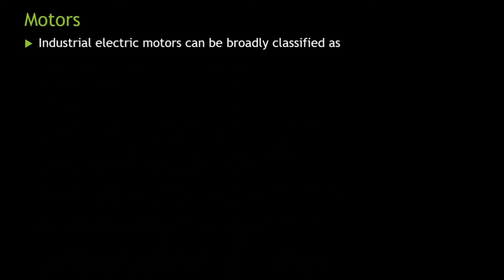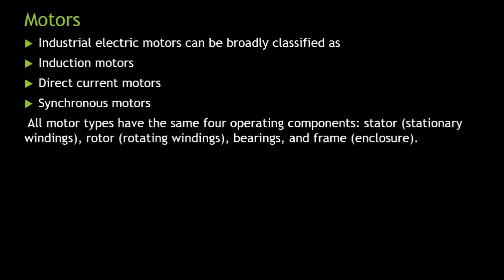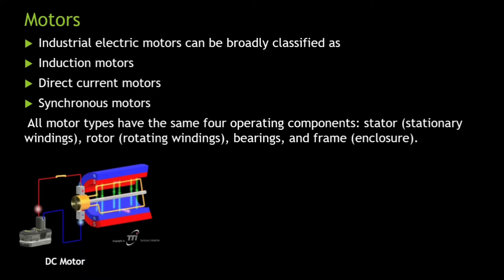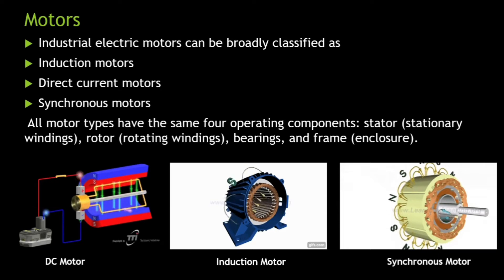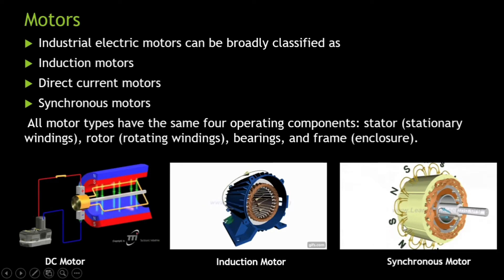We see that there are common industrial electric motors: induction motors, direct current motors and synchronous motors. And in all these motors, the basic operating components are stator, rotor, bearings and its frame. We know this is a DC motor, this is induction motor and this is synchronous motor. DC motor works on DC supply, then these two are AC motors. If the synchronous speed is not equal to the rotor speed, we say it is an induction motor or an asynchronous motor.